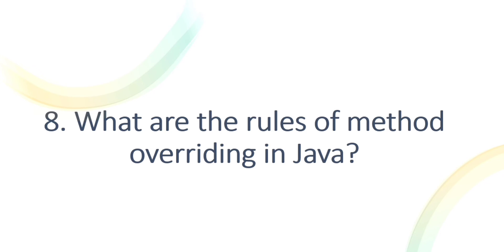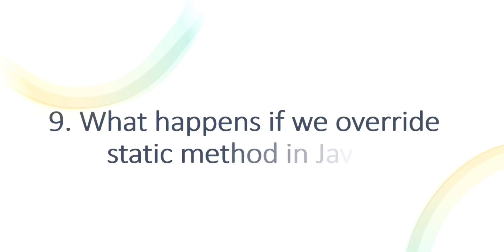Access modifiers in Java are: public, protected, default, and private. For example, if the parent class method is public, the child class can only use public since nothing provides greater access. If the parent uses protected, the child can use public or protected. Also, final methods and static methods cannot be overridden.